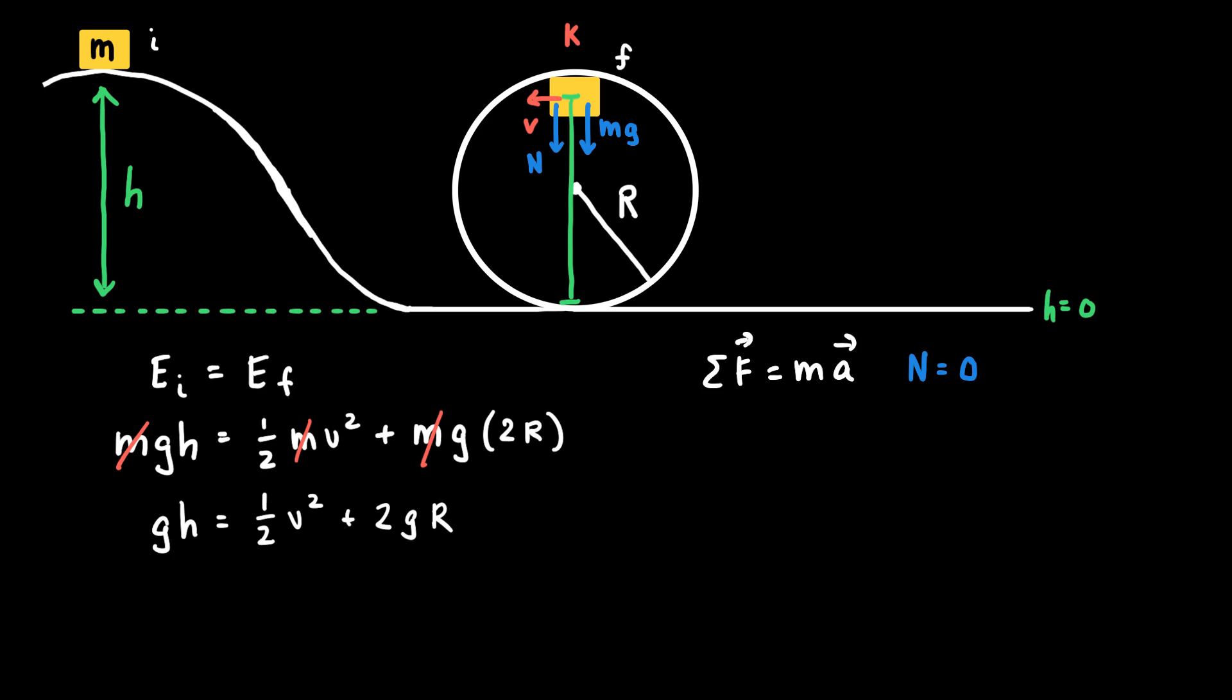And so here, if I say down is positive, then we could write this equation as N plus mg equals m times the centripetal acceleration v squared over r, where r is the radius of the circle that the cart is moving in, which happens to be the radius of the loop. And that's only true because the loop is circular.